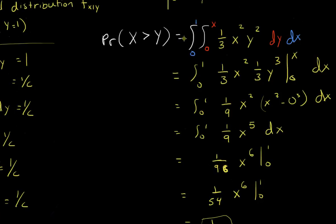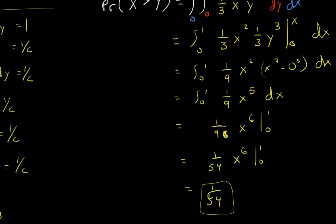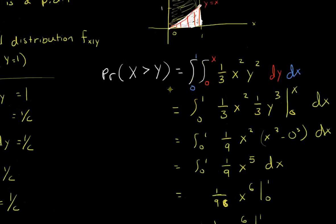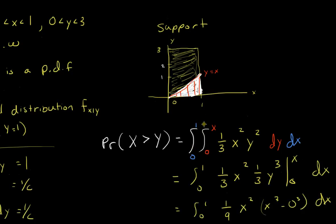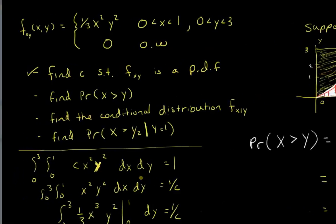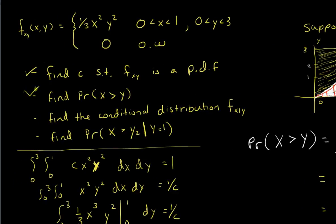Always double check that if you're finding a probability, your answer is between 0 and 1. If your answer is not between 0 and 1, you didn't find a probability. All probabilities are numbers between 0 and 1 — it's a good way to roughly make sure that makes sense. Next, I want to talk about finding the conditional distribution of x given y.